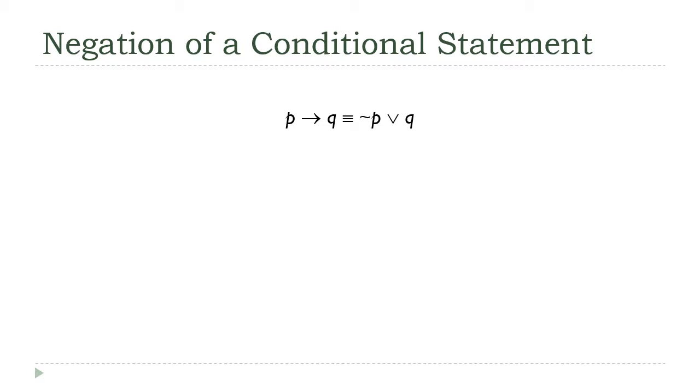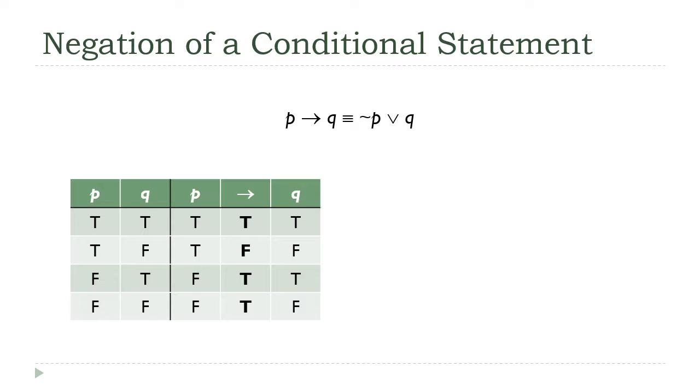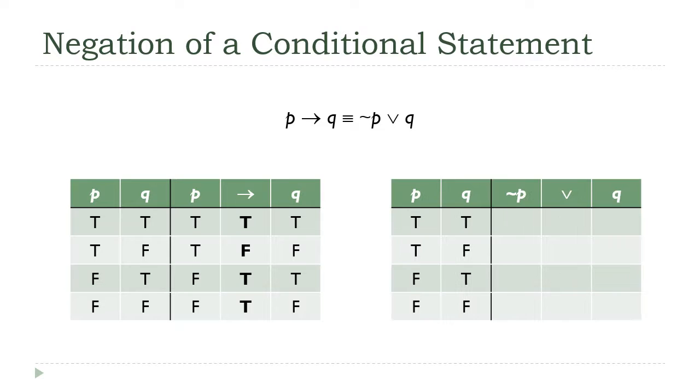So I know we're interested in the negation of a conditional statement, but just bear with me. If we can show this equivalence first, we can get the negation we want much more quickly. So the left-hand side really isn't very interesting. It's just a simple conditional statement, and we already know what the truth table for that looks like. Now the right side, on the other hand, we'll have to go through the process and work out.